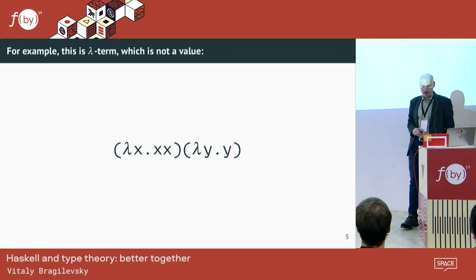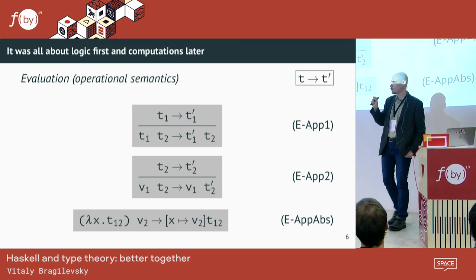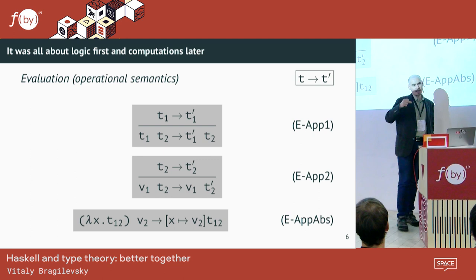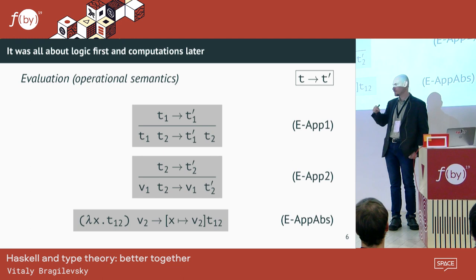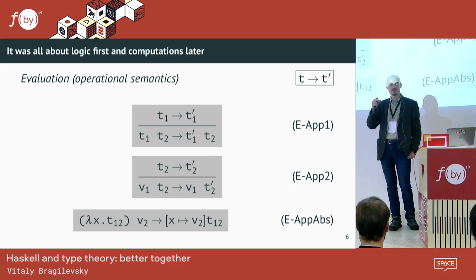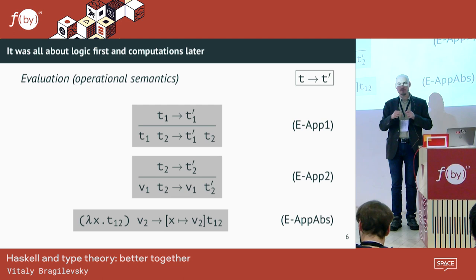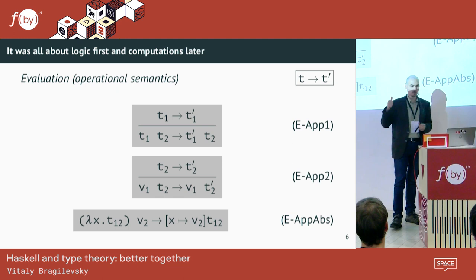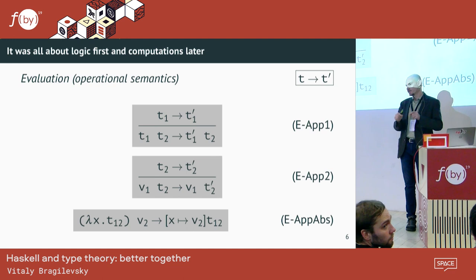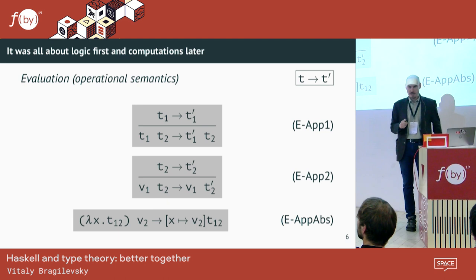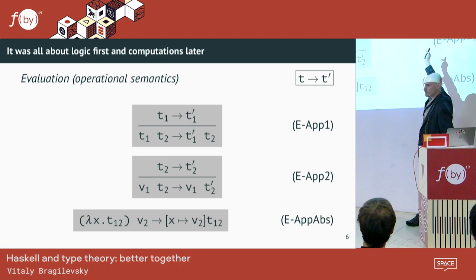Originally, Church invented all this for doing logic — he tried to prove something about logic and he failed. It turned out the system doesn't work. But then he realized it's possible to describe computation using lambda calculus. These are rules for computation. In type theory they call this evaluation, or sometimes dynamics, or operational semantics. Technically it's a relation which takes one term and transforms it to another.